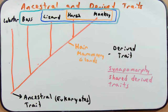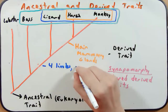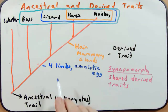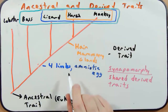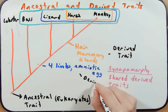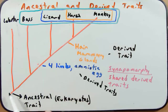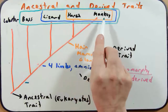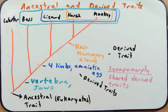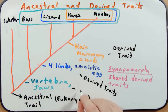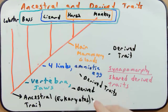The synapomorphy that defines the lizard, horse, and monkey monophyletic group would be four limbs and an amniotic egg — these are also derived traits that have arisen from the initial ancestral traits. The synapomorphy that helps define the monophyletic group of bass, lizard, horse, and monkey is that they all have vertebrae and jaws — again, derived traits, as they are not found in the ancestor.